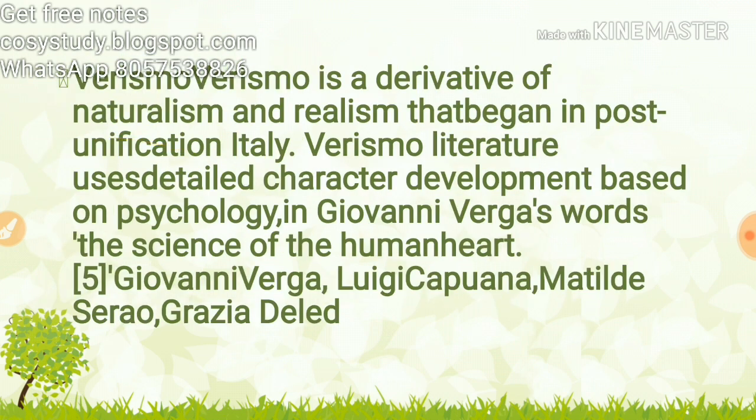Verismo: derived from naturalism and realism, this movement began in post-unification Italy. Verismo literature uses detailed character development based on psychology. As Giovanni Verga described it, this is the science of the human heart.